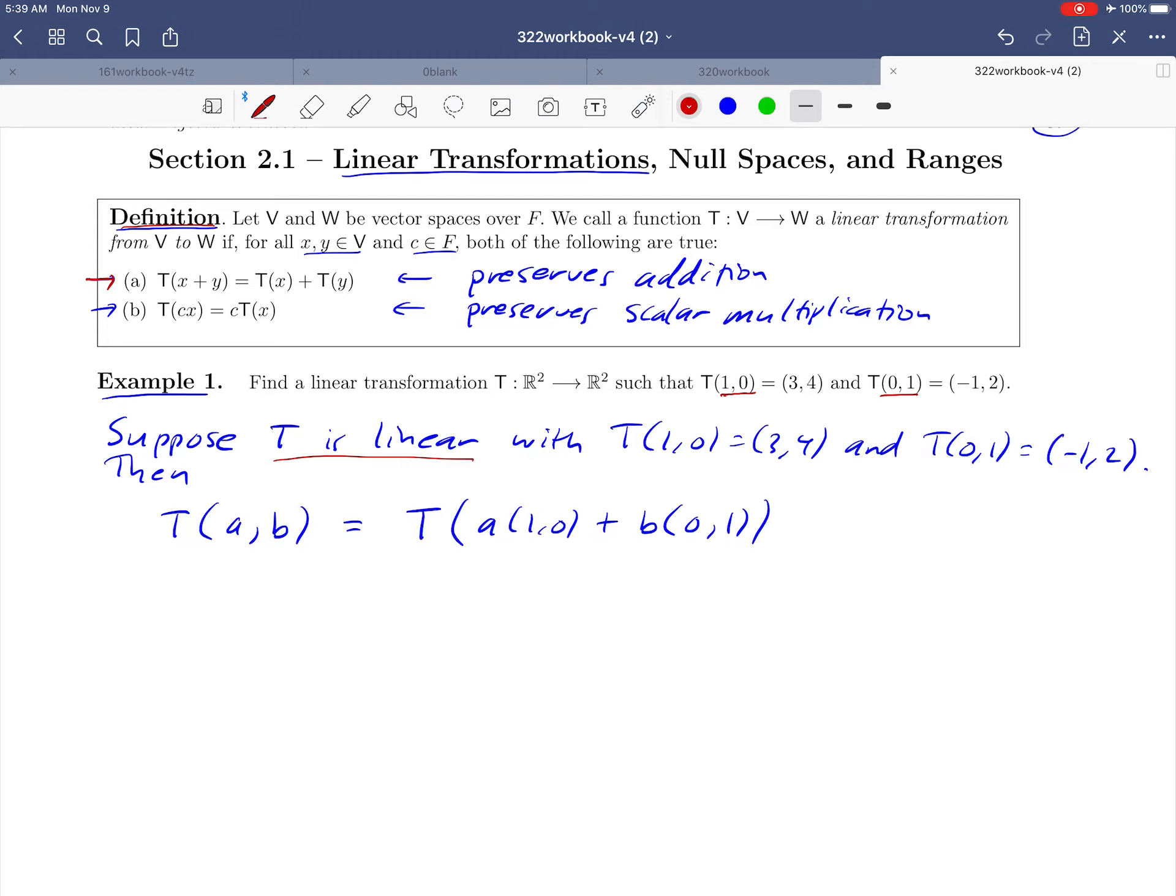It tells us that if we take T of x plus y, we can split that up into T of x plus T of y. So if you think of this first thing as being our x and the second thing as being our y, we can rewrite that as T of a times (1, 0) plus T of b times (0, 1). We just use the definition of linearity property A.